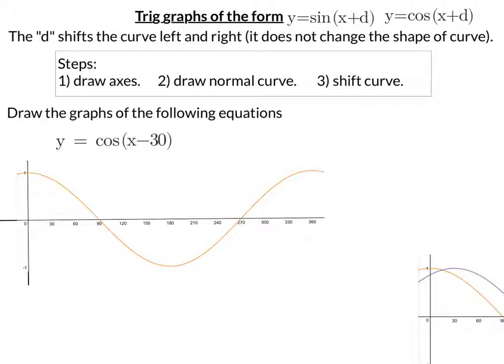Now we draw the shifted curve. So we've got here negative 30. This means it's moving to the right by 30. So every point is 30 along. So where it used to have its maximum at 0, that's now going to be 30 along. So it's going to be at 30.